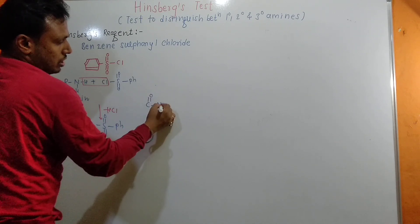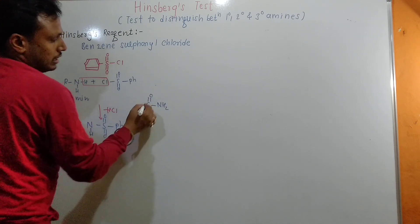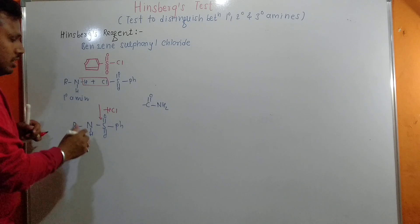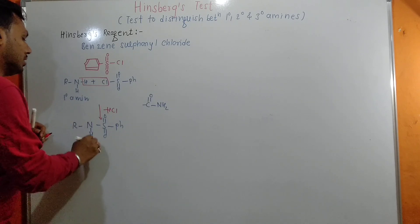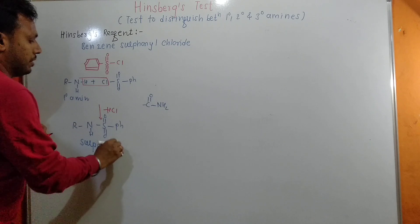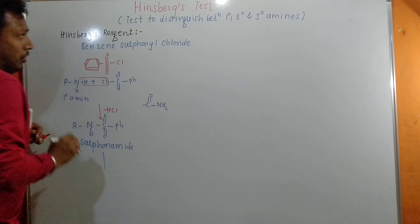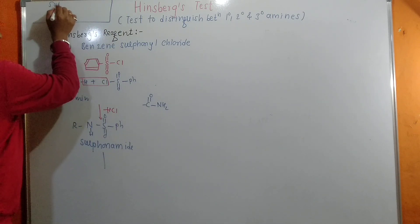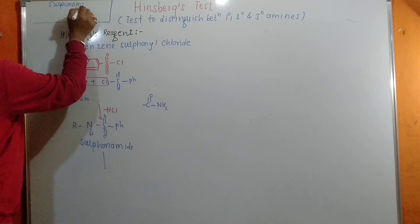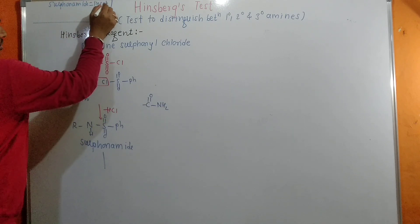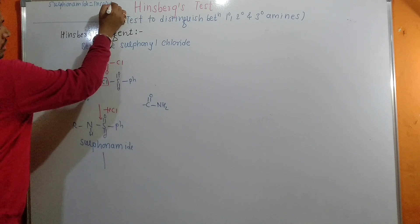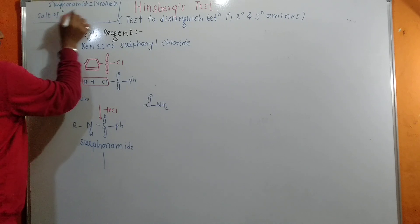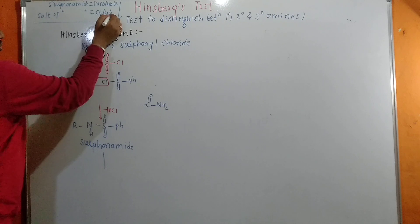The product R-NH-S(=O)₂-Ph resembles an amide. An amide has the formula C(=O)-NH₂, but here instead of carbon we have sulfur, so this compound is called a sulfonamide. One important thing to remember: sulfonamides are insoluble, while their salts are soluble.